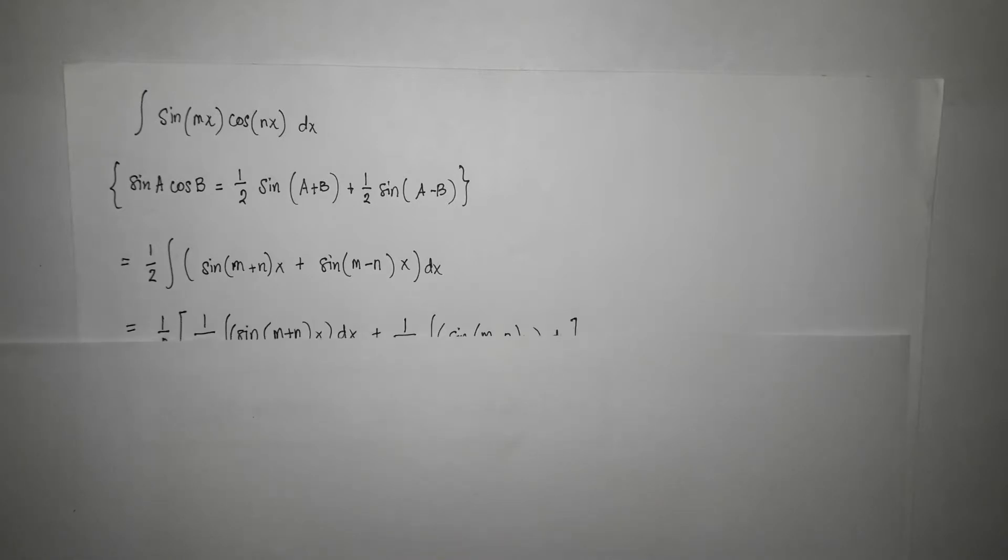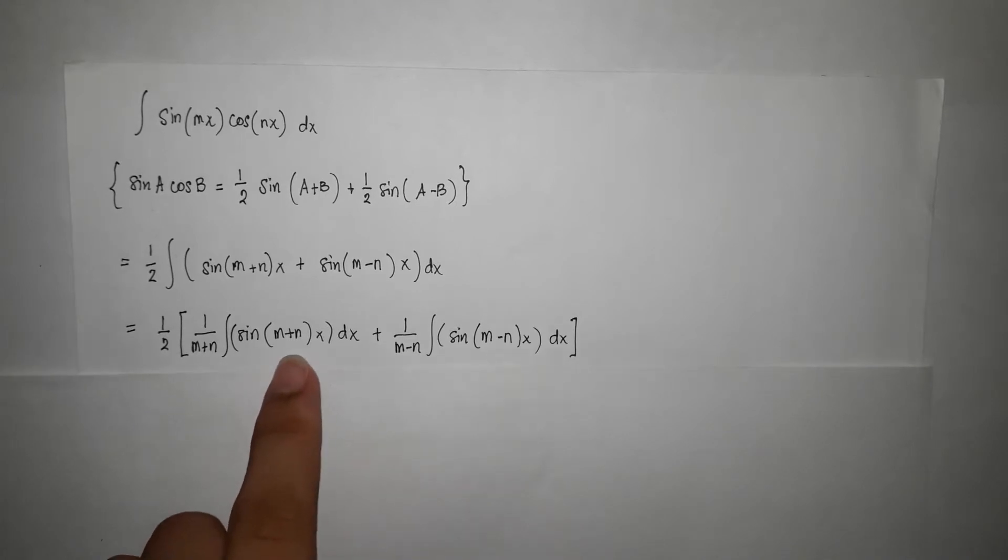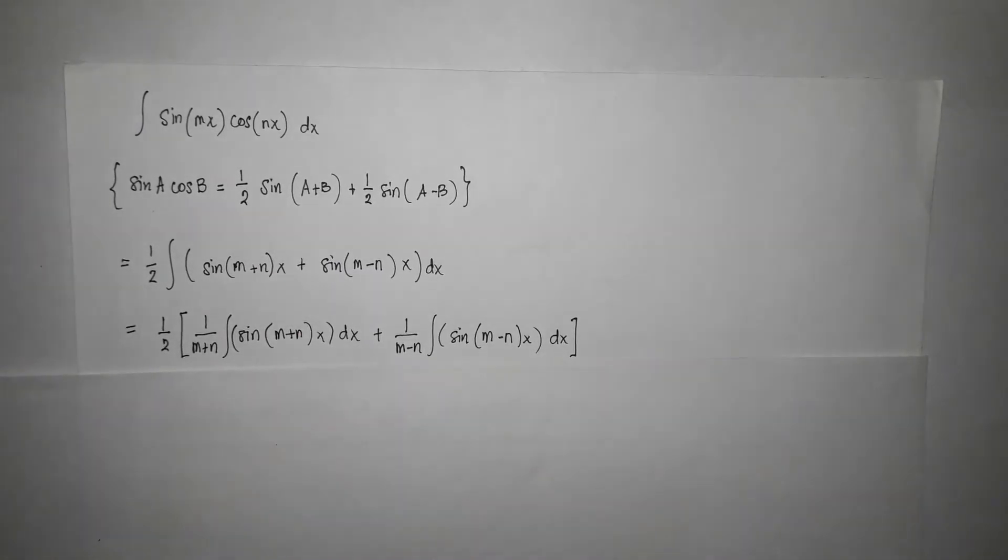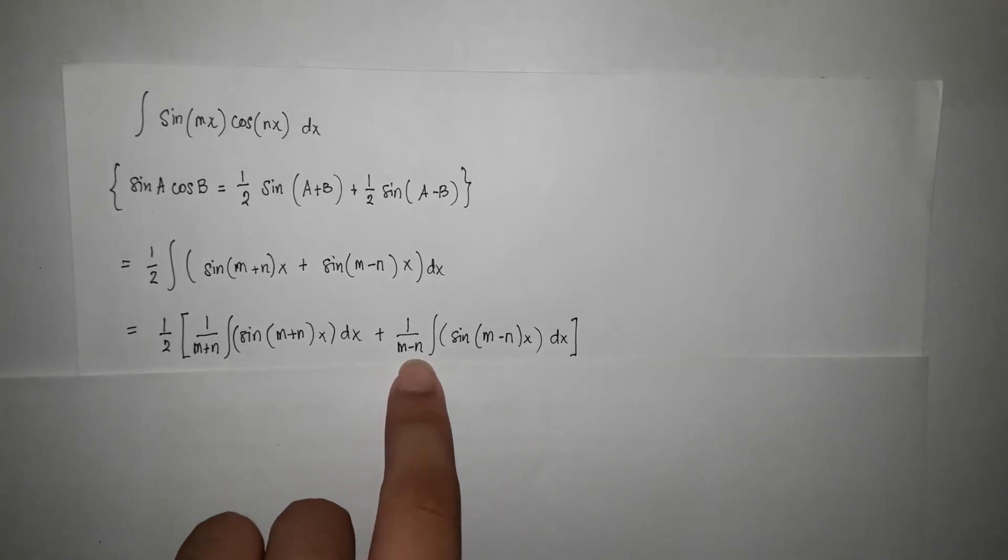So let's move on. Now we're going to integrate the angle of the sine and it would give us 1 over m plus n and as well as the integral of the angle of the other side, so m minus n. So we now have 1 over m minus n.